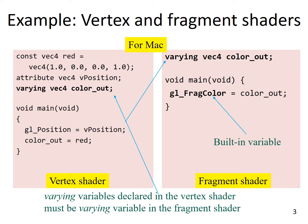Here is the same example written for MAX, where a similar handshake must be performed. The output variable from the vertex shader is called varying, and it's also defined as a varying variable inside the fragment shader. Note that this is not as elegant as an out variable defined in the vertex shader becoming an in variable in the fragment shader, because this is how variables flow in the graphics pipeline. Also note that in MAX, in the fragment shader, we are using the inbuilt variable gl_FragColor instead of defining a new variable ourselves.